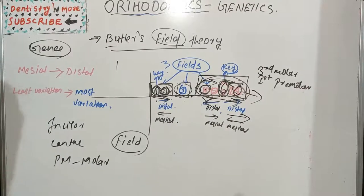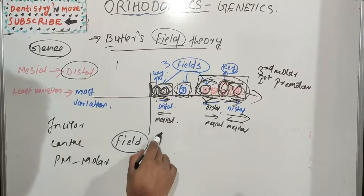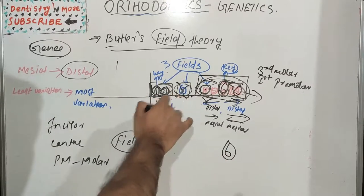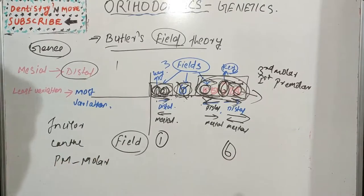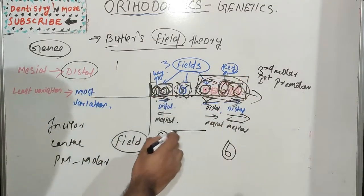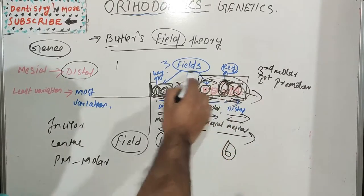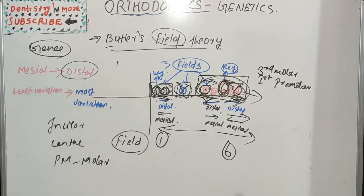In summary, the least variable teeth are towards the mesial side and the most variable are towards the distal side. We have two key teeth — the central incisor and the first molar — and the canine is excluded from the theory. Butler mentioned three fields: incisors, canine, and premolars-molars. The concept is simple: towards the distal end from the key tooth, variability increases. That's all about Butler's Field Theory.